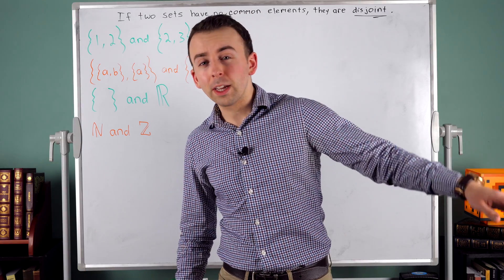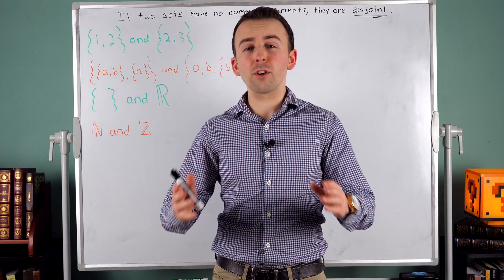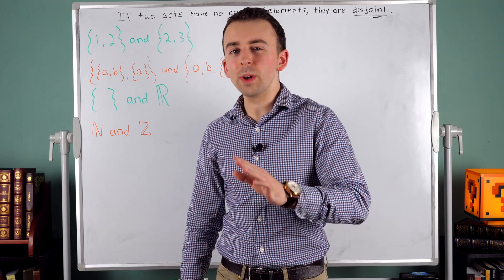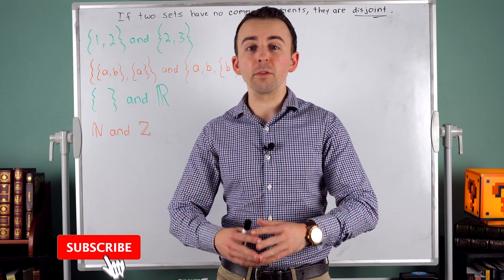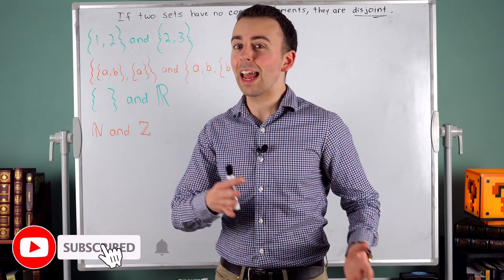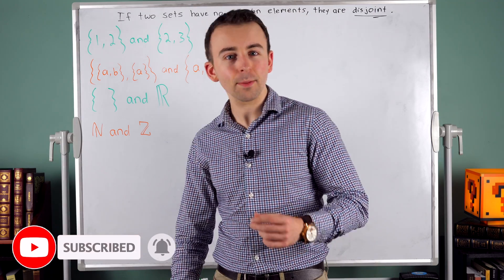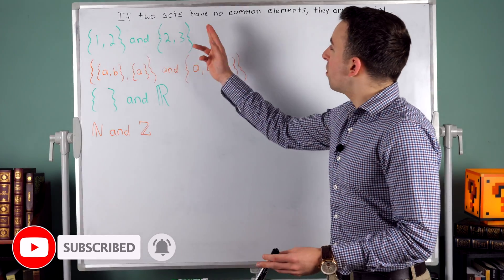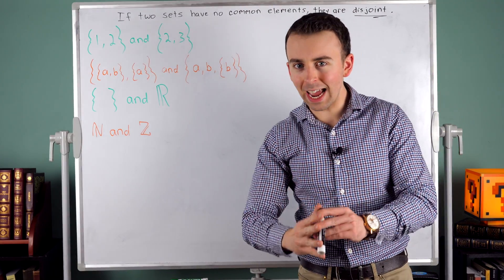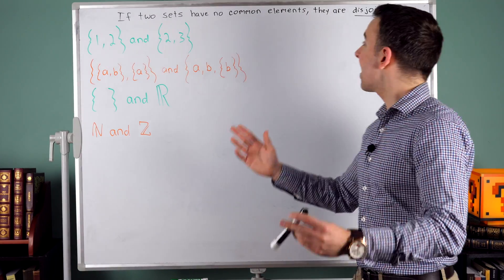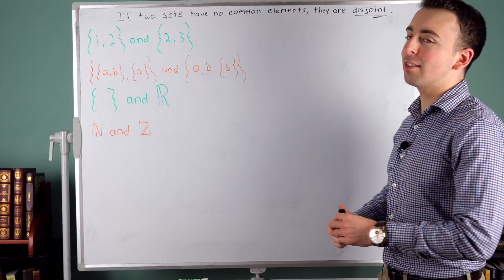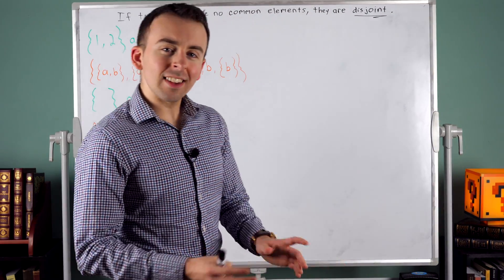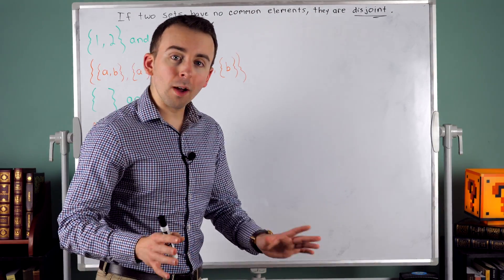I'm tired. The crickets are out there chirping. That means it's time to go through a few examples of disjoint and not disjoint sets. Remember that if two sets have no common elements, they are disjoint. The idea of disjoint sets is not too complicated.